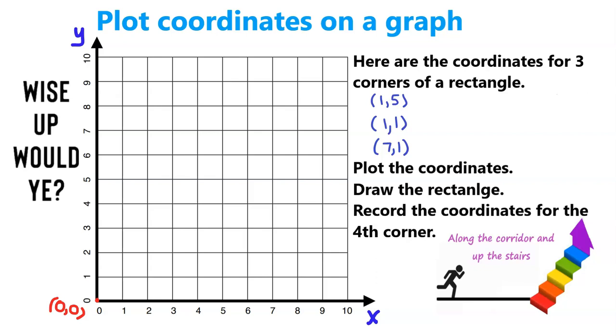Here's a typical question about plotting coordinates. Here are the coordinates for three corners of a rectangle: (1, 5), (1, 1), (7, 1). Plot the coordinates, draw the rectangle, and record the coordinates of the fourth corner. So let's begin. We'll begin by plotting the coordinates that we were given.